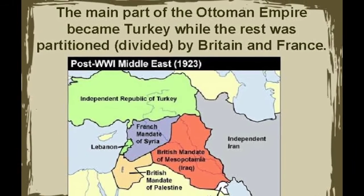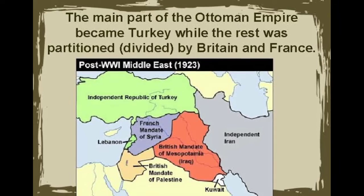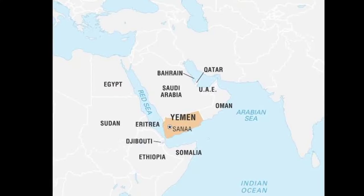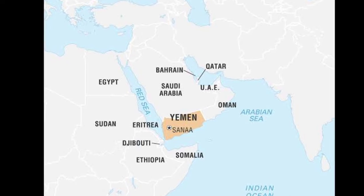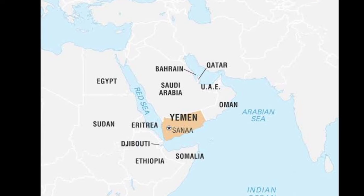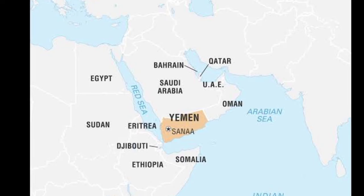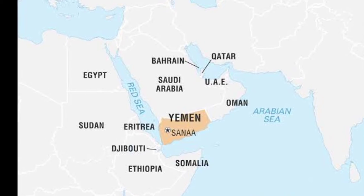The Ottoman Empire's possessions in the Arabian Peninsula became the Kingdom of Hejaz, which the Sultanate of Najd — today Saudi Arabia — was allowed to annex, and the Mutawakilite Kingdom of Yemen.